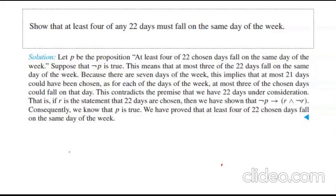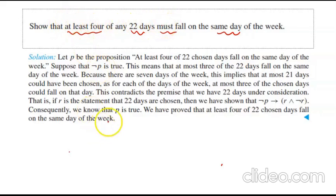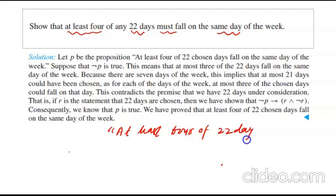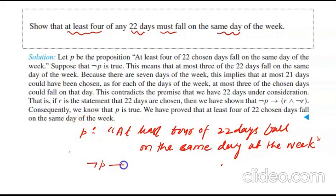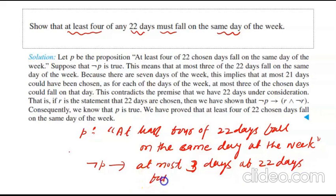The first example: we need to show that at least four of any 22 days must fall on the same day of the week. Our statement P is that at least four of 22 days fall on the same day of the week. So what is the negation of P? The negation of P is that at most three days of the 22 days fall on the same day of the week.